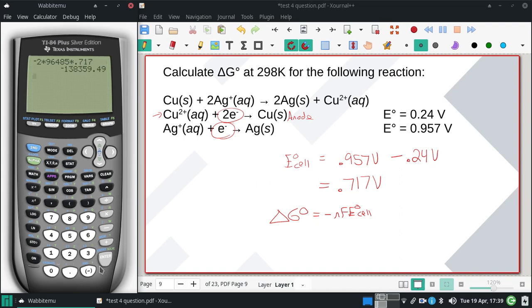And we get a delta G of negative 138,000. But since we always do delta Gs in kilojoules, we have negative 138 kilojoules.